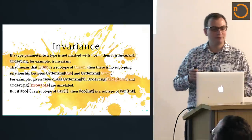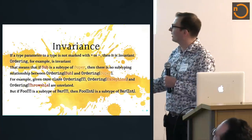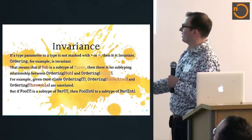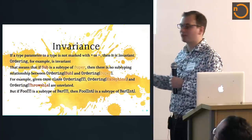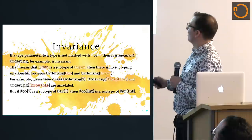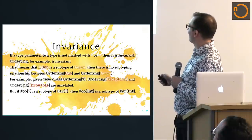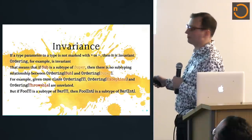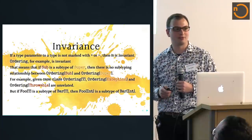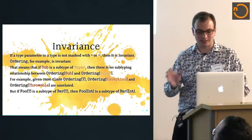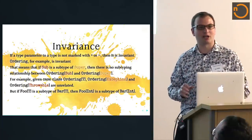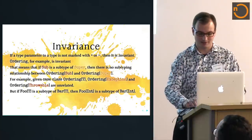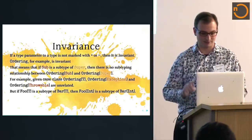Be careful though — if we have a Foo[T] and a Bar[T] and there's a relationship between the non-generic part of the type — like if Foo and Bar have a subtyping relationship — we still have that relationship between them provided they have the same type parameter. That's a possible trap: thinking there's never any relationship between invariant types.